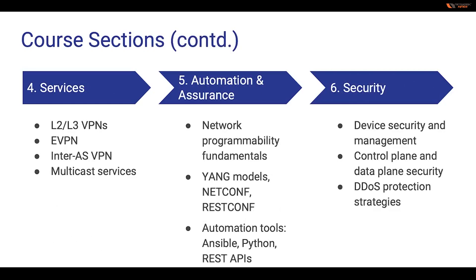In the Services domain, we will discuss various critical services provided by service provider networks. This includes in-depth coverage of Layer 2 and Layer 3 VPNs, Ethernet VPNs, inter-AS scenarios, and multicast services. These services play a crucial role in managing network traffic efficiently and ensuring the delivery of high-quality, reliable services to end users. Understanding these concepts is essential for anyone involved in the design, implementation, and management of service provider networks, as they enable the creation of secure, scalable, and flexible network solutions.